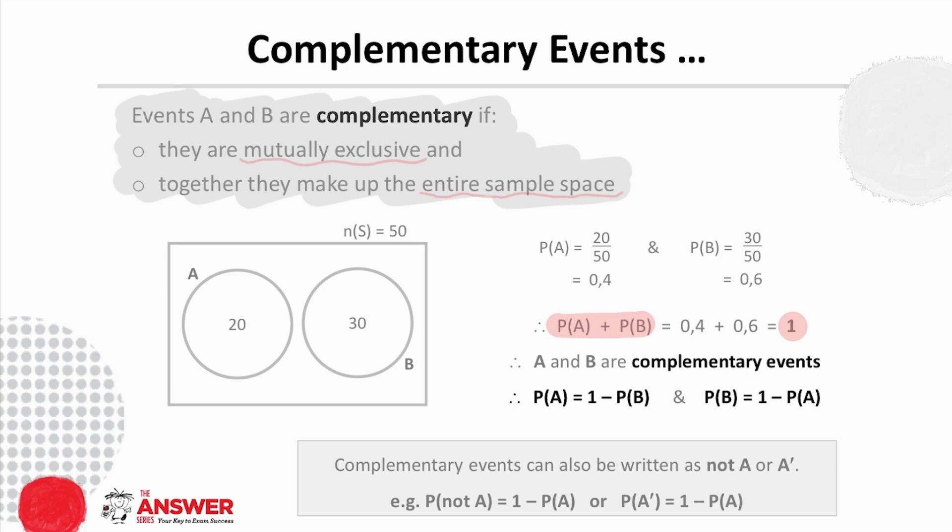And so for complementary events, these statements will be true. The probability of the one will equal 1 minus the probability of the other. And then just in terms of notation, complementary events can also be written as not A or A dash as shown here.